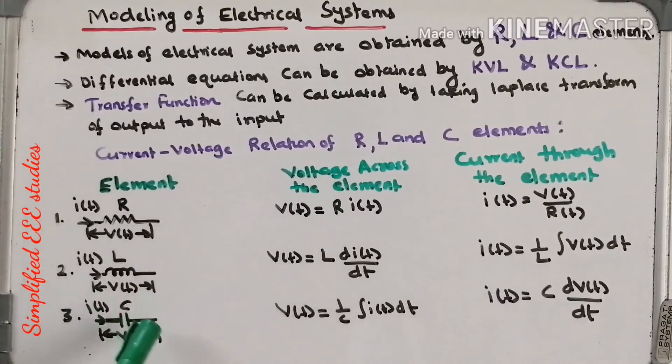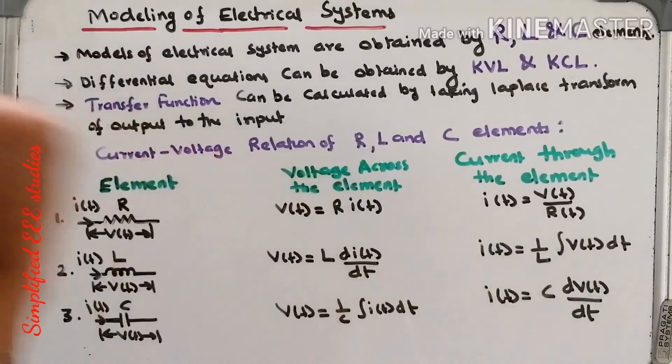Now let us move on to capacitor, the third element. First you can calculate I(t) of the capacitor. I(t) is given by C into dV(t)/dt.